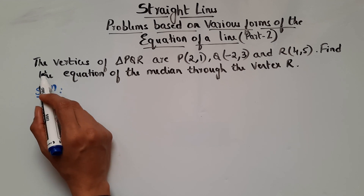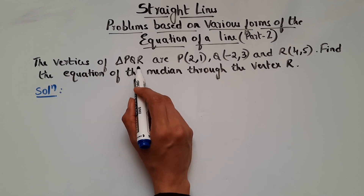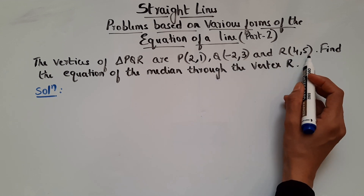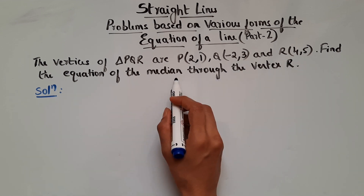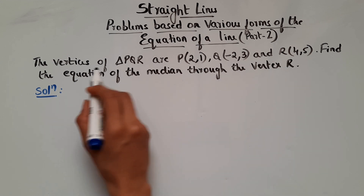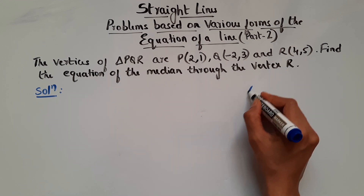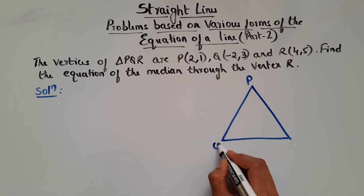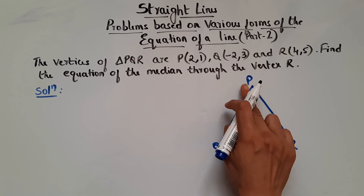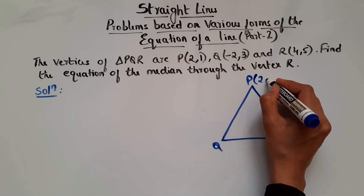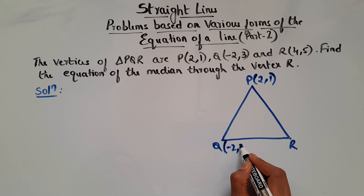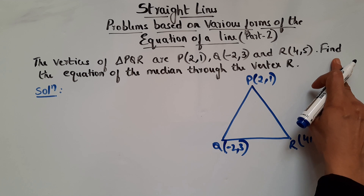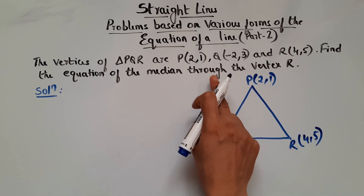So let's continue with the problems. Here it says the vertices of triangle PQR are P(2,1), Q(-2,3) and R(4,5). Find the equation of the median through vertex R. So they are saying we have a triangle PQR, so let's draw triangle PQR. So P is (2,1), Q is (-2,3) and R is (4,5). Find the equation of the median through vertex R.